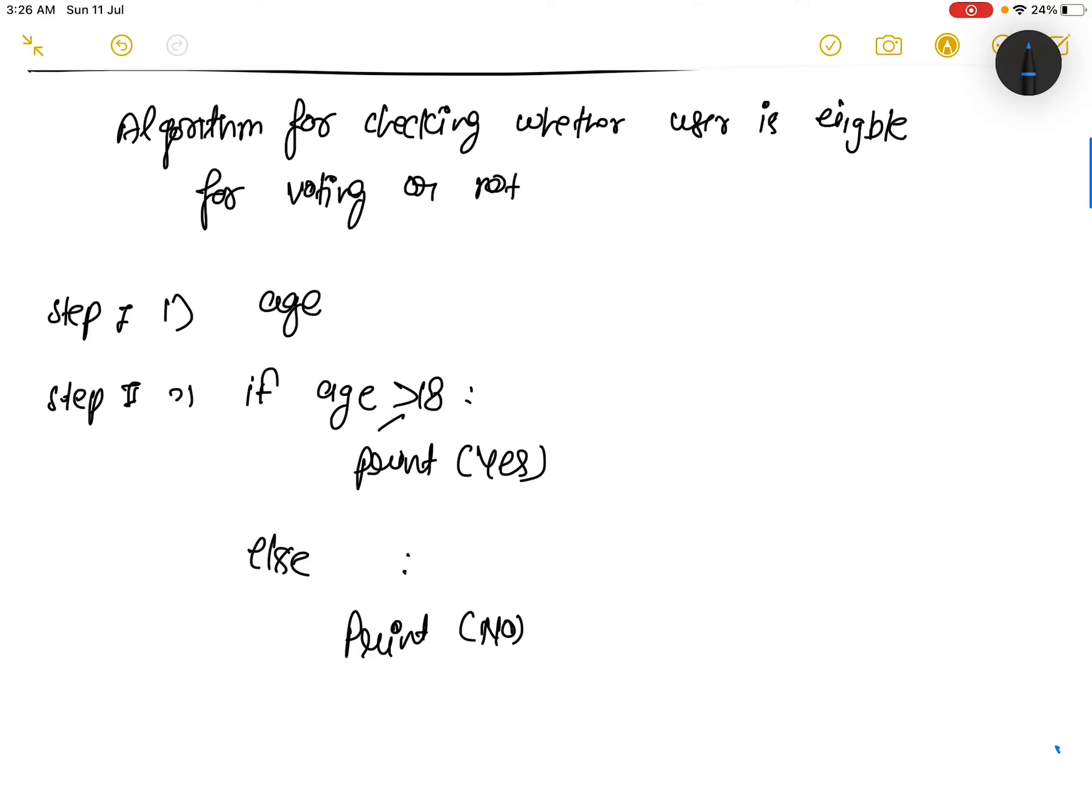So in this example we are going to calculate the running time for this small algorithm. This is nothing but for checking whether the user is eligible for voting or not. In the first line the user will input their age.